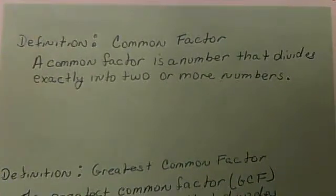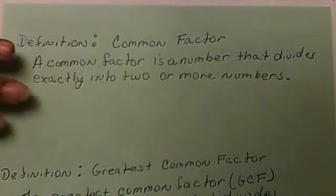Now the definition of a common factor: a common factor is a number that divides exactly into two or more numbers. Now we just came from listing factors, so we should know how to list factors.